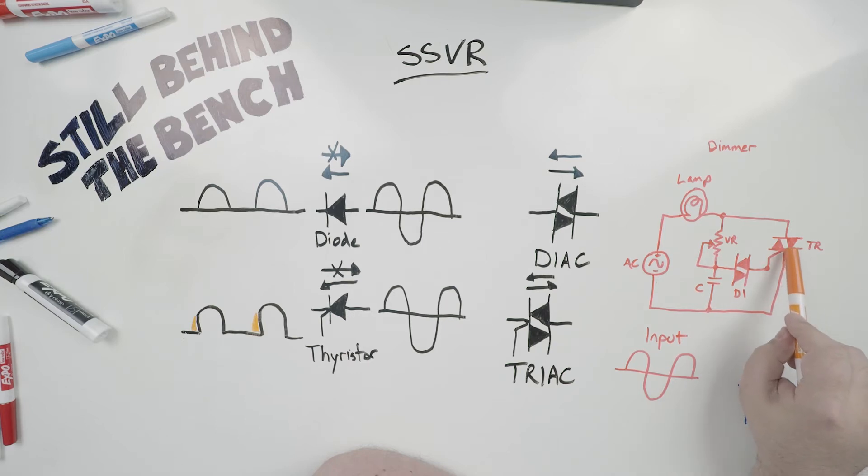Power will flow to the gate of the TRIAC, it will start conducting, and then the lamp will turn on.